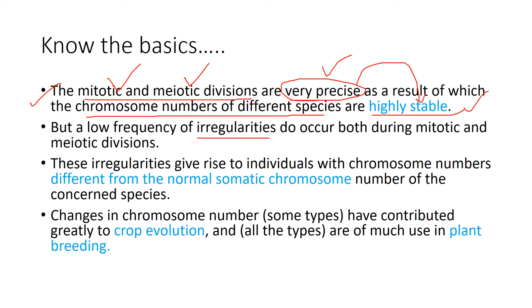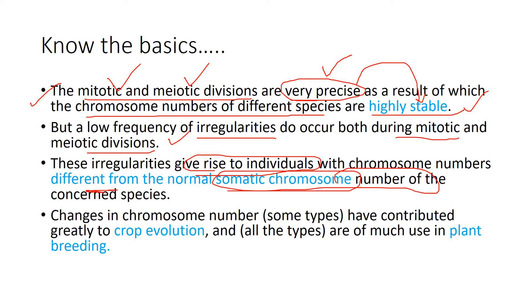However, in very few cases, there are alterations or irregularities happening in both mitotic and meiotic divisions. These irregularities can give rise to individuals with chromosome numbers different from their normal somatic chromosome number. This is the principle underlying ploidy breeding. It is like a double-edged sword — alterations can give rise to a superior crop greatly involved in crop evolution, or it can result in a lethal crop, causing the death of the species.